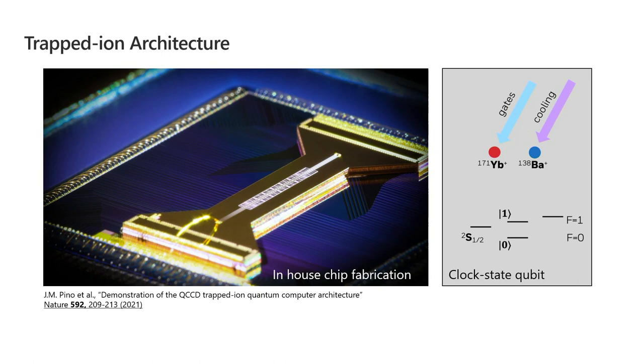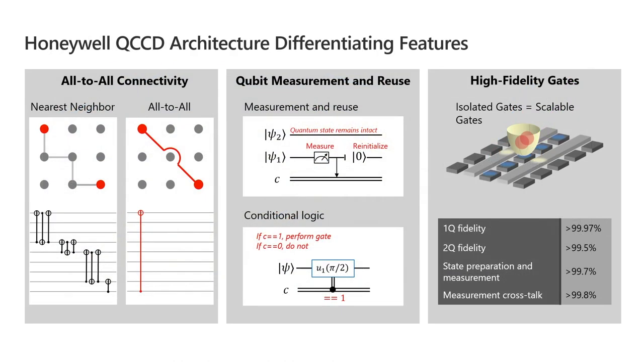So our architecture is sometimes referred to as a QCCD architecture, a quantum charge coupled device architecture. And that's because we can move our qubits around, we can shuffle them around this trap in a similar way to how electrons are shuttled around a CCD sensor at the back of your digital camera. And to be able to move and fully program the position of our qubits has a lot of great advantages.